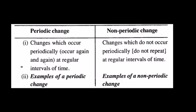Non-periodic changes do not occur after a fixed time interval. For example, volcanic eruptions — we don't know when the next one will happen. Similarly, earthquakes, tsunamis, and forest fires are non-periodic because we cannot predict when they will occur. Even the freezing of water into ice is a non-periodic change. Sneezing and rusting of iron are also examples of non-periodic changes, as they do not repeat after a fixed interval of time.